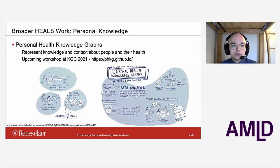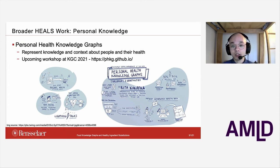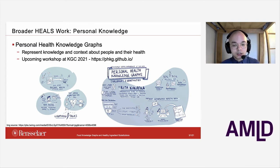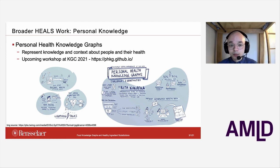Another piece of work being conducted at HEALS is trying to represent and capture personal knowledge better. One way we've been trying to do this is by developing what we call personal health knowledge graphs — representing knowledge and context about people and their health in a knowledge graph format. This relates closely to the aspect of context I mentioned earlier: being able to look into context about a person and use it in a more meaningful way to suggest different types of foods best suited to users' health. There will also be an upcoming workshop on this run by people related to the HEALS project at the Knowledge Graph Conference happening this May.